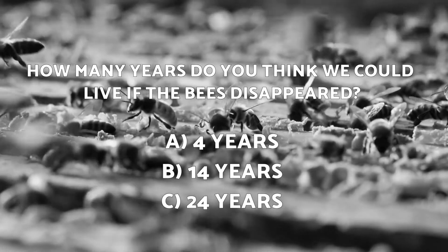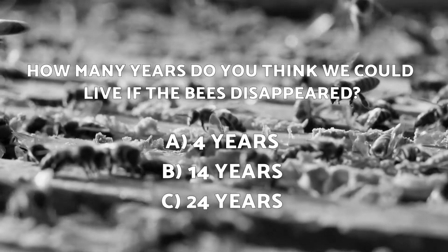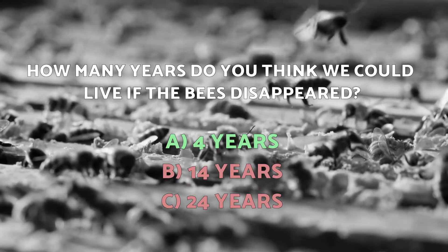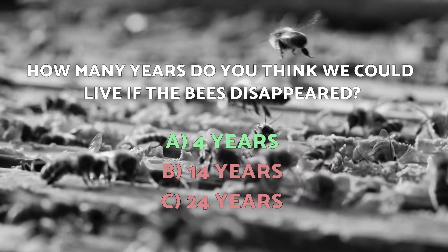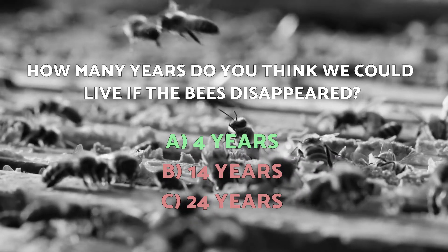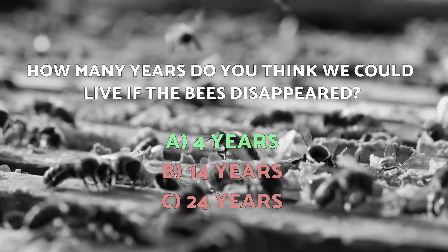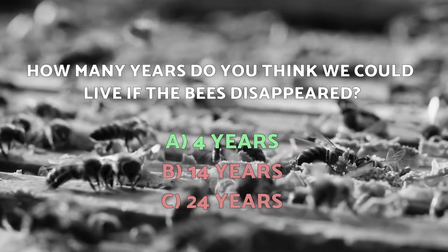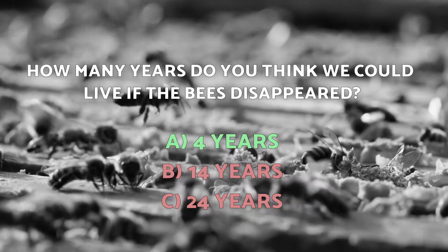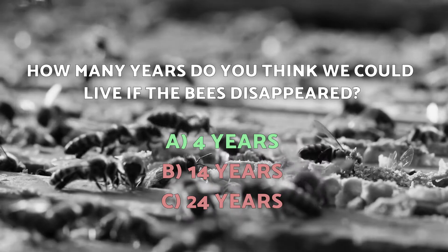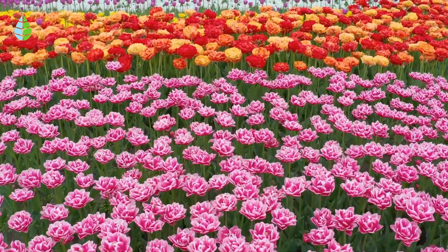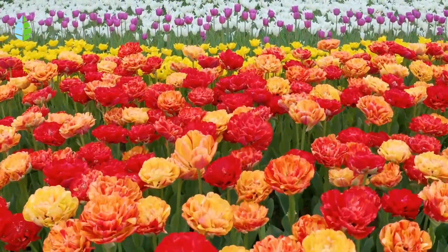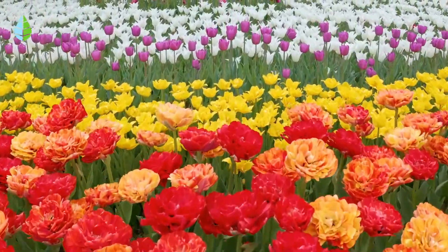Going back to the question we asked before — the correct answer is A. If bees disappear, we would only have four years to live. This is according to the renowned scientist Albert Einstein, who knew the importance of bee pollination and the essential function of bees within the correct functioning and ecological balance of planet Earth. So tell us, did you know that pollination was so important for our survival? We hope you've enjoyed this video, and we'll see you in the next one.